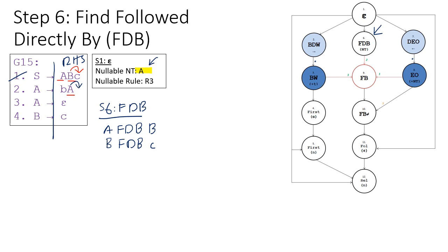Now, what about the consideration of the nullable non-terminal? If our nullable non-terminal were not only A but also B, then if we could cancel B from our rule, A could also be followed directly by C — giving us A FDB C. But this is a hypothetical situation. In our current grammar, B is not a nullable non-terminal. Therefore, we only have these two FDB relations: A FDB B and B FDB C.